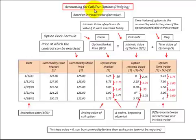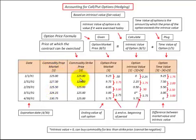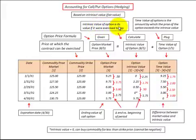We're going to be going over accounting for call or put options as a hedging investment, based on the intrinsic value or the fair value of the option. Our example will be for a call option where we have a varying commodity price and a strike price or exercise price that we can purchase this commodity at. This option can be broken down into two components: the intrinsic value component and the time value component. The intrinsic value is the option's value if exercised today, and the time value is the amount by which the price of the option exceeds the intrinsic value.